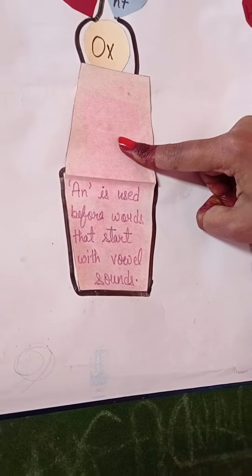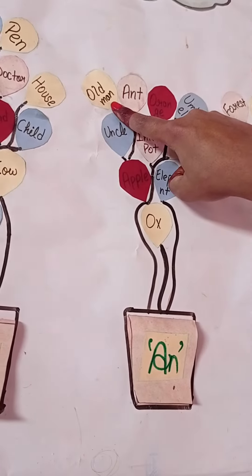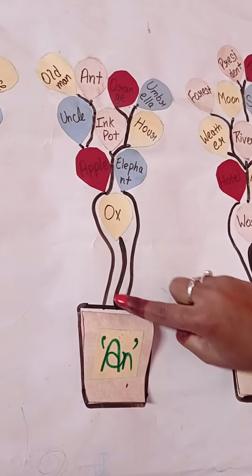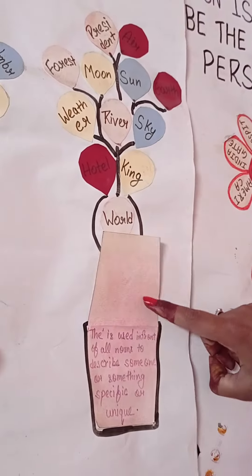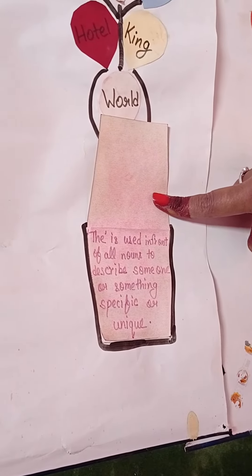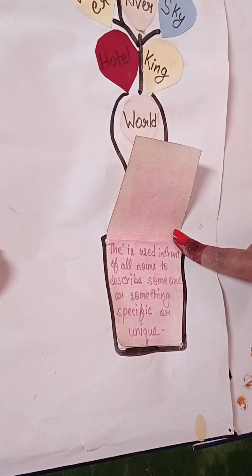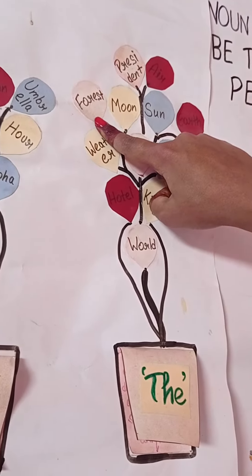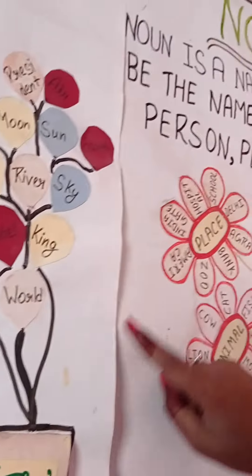'An' is used before words that start with a vowel sound, such as old, aunt, orange, and umbrella. 'The' is used before all nouns to describe someone or something specific or unique, such as forest, moon, sun, and earth.